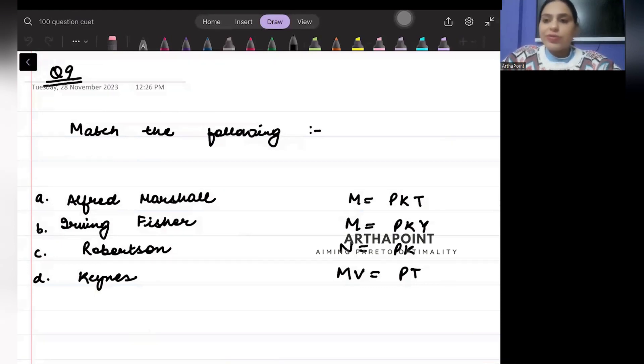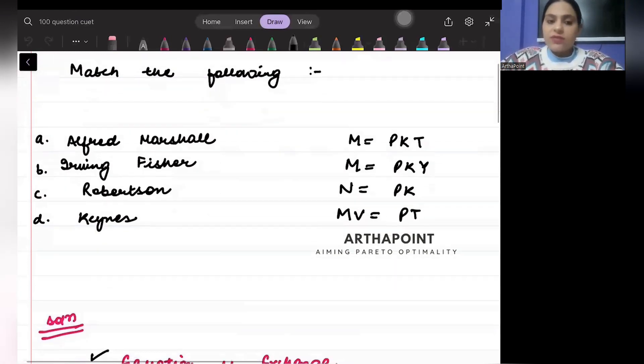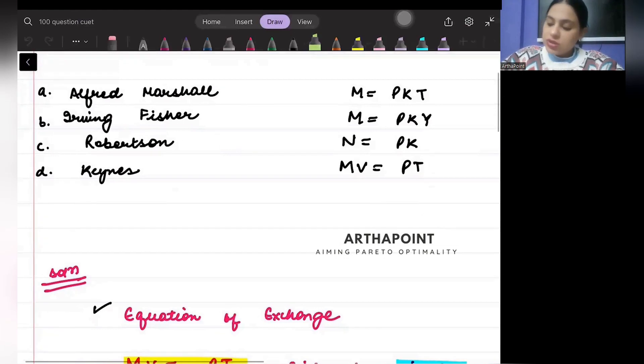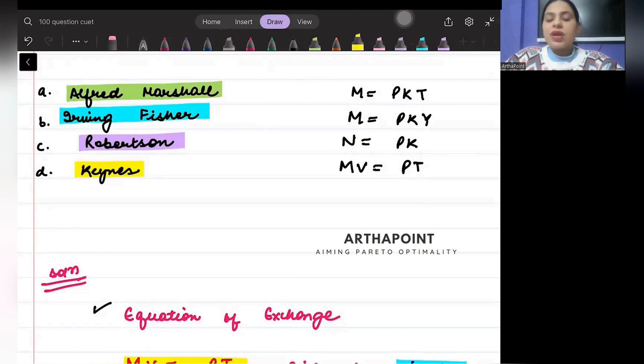Based on the quantity theory of money, let's read the question. Match the following - four options are given to you: Alfred Marshall, the second one is Irving Fisher, the third one is Robertson, and the fourth one is Keynes.